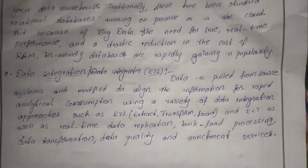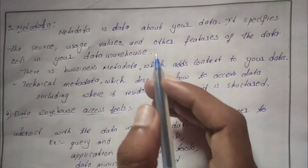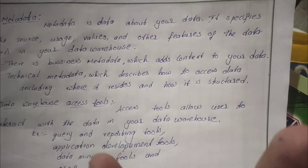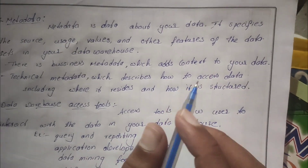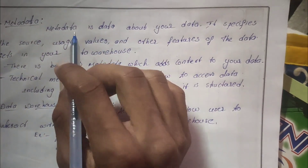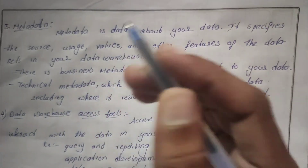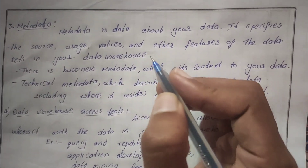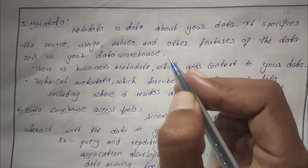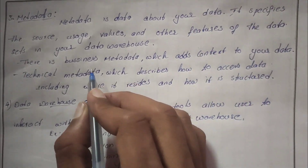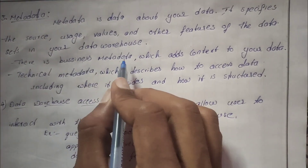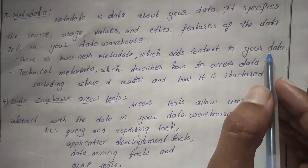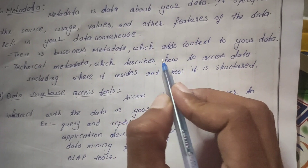Next is metadata. Metadata is data about your data — it describes the source, usage, value, and other features of the data in your data warehouse. There are two types: business metadata, which relates to the content of your data, and technical metadata, which describes how to access data, including where it resides and how it will be secured.